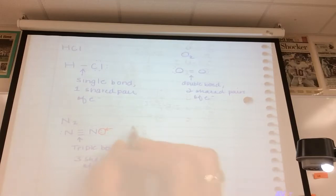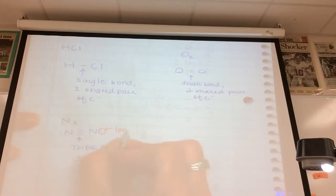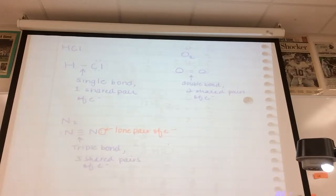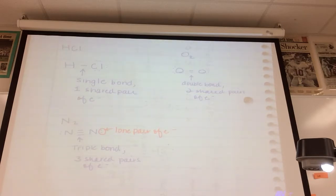These dots you see here are valence electrons — this is a lone pair of electrons. These are valence electrons involved in bonding as well. We'll get into that; we're going to be doing Lewis dot structures for compounds, not just atoms.